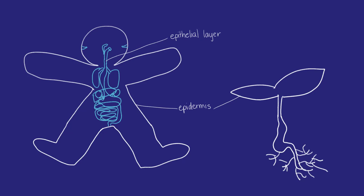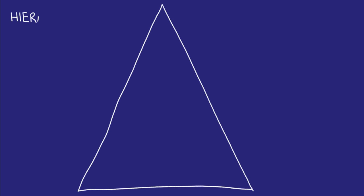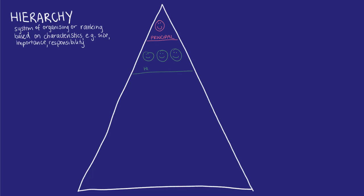Another way of looking at the complexity of multicellular organisms is through the hierarchy of systems. A hierarchy is a system of organizing people or ideas in terms of level, importance or responsibility.